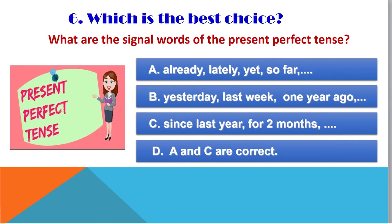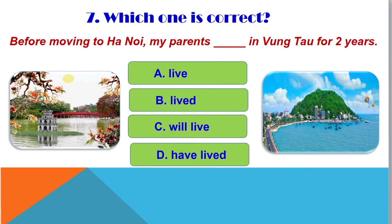Question 6: what are the signal words of the Present Perfect tense? A: already, lately, yes, so far; B: yesterday, last week, one year ago; C: since last year, for two months; D: A and C all correct — the correct answer is D. Question 7: before moving to Hanoi, my parents ___ in Vũng Tàu for two years. A: live, B: lived, C: will live, D: have lived — the correct answer is B: lived.